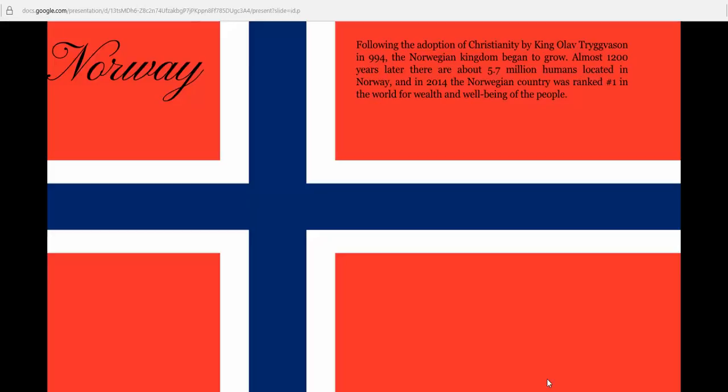Norway. Following the adoption of Christianity by King Olof Tchugveshin in 994, the Norwegian Kingdom began to grow. Almost 1200 years later, there are about 5.7 million humans located in Norway. In 2014, the Norwegian country was ranked number one in the world for the wealth and well-being of the people.